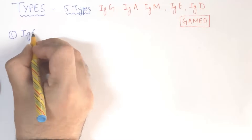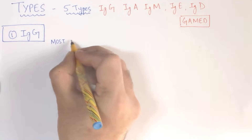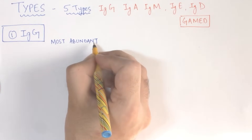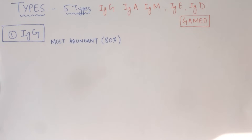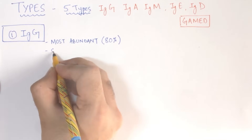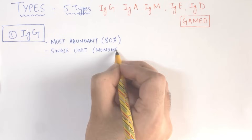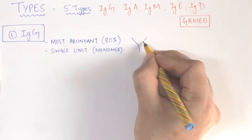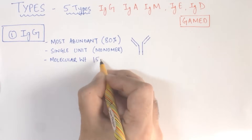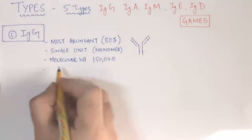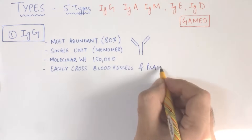The immunoglobulin G is the most abundant type of antibody present in humans, and it accounts for approximately 80 percent of the total antibodies in the blood. IgG is a single-unit antibody — it consists of a Y-shaped monomer. The molecular weight of IgG is 150,000.